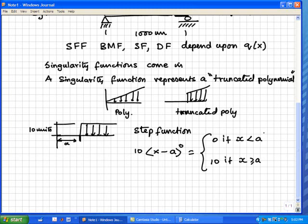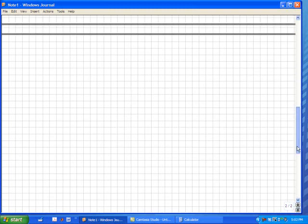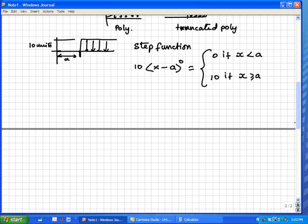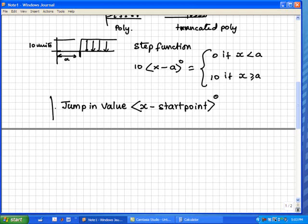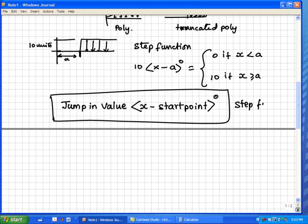That is what it means. You can see that that is my function. This is a completely simple and trivial way of saying it. Let us write it in a way that makes sense: it is jump in value times (x - start point) to the power 0. That is what is called a Macaulay step function.